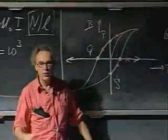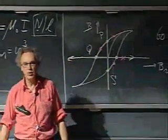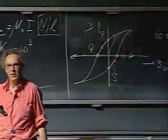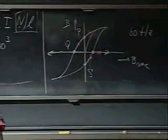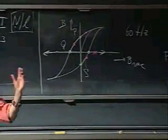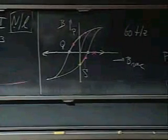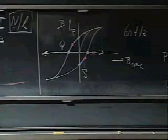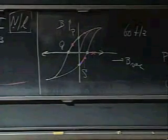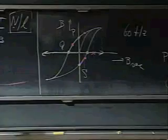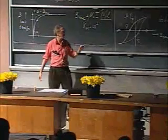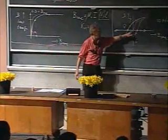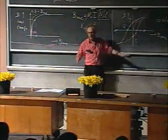And now you heat it up above the Curie point, as we did last time in my lecture, and then the domains completely fall apart, and then you cool it again below the Curie point, and then it is virginal material again. And then you could start here again. That's one way you could do it.